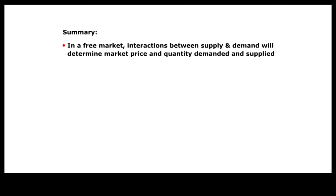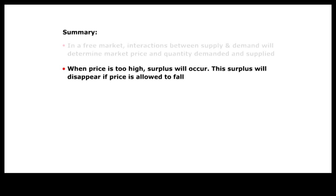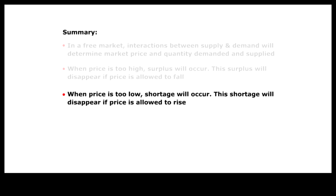To summarize, in a free market, interaction between supply and demand determines market price and quantity demanded and supplied. When price is too high, surplus will occur, and this surplus would disappear if price is allowed to fall. When price is too low, shortage will occur, and this shortage would disappear if price is allowed to rise.